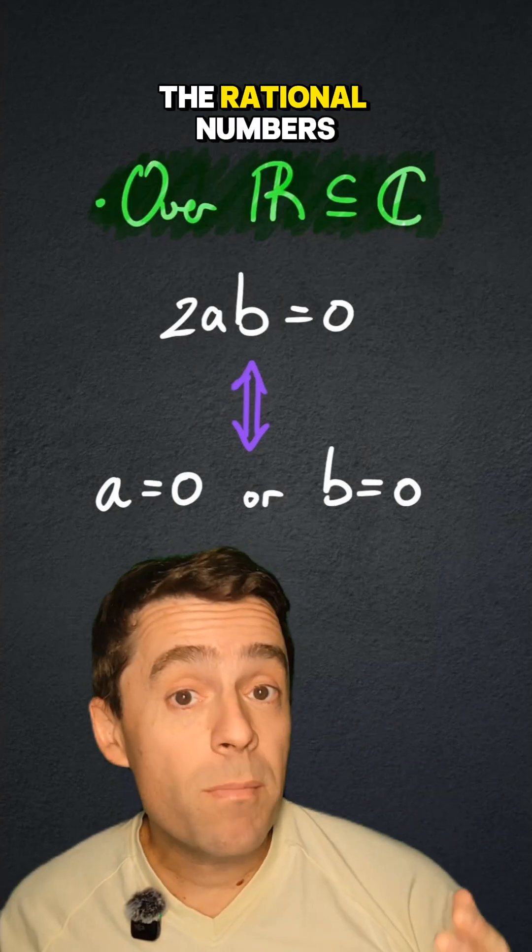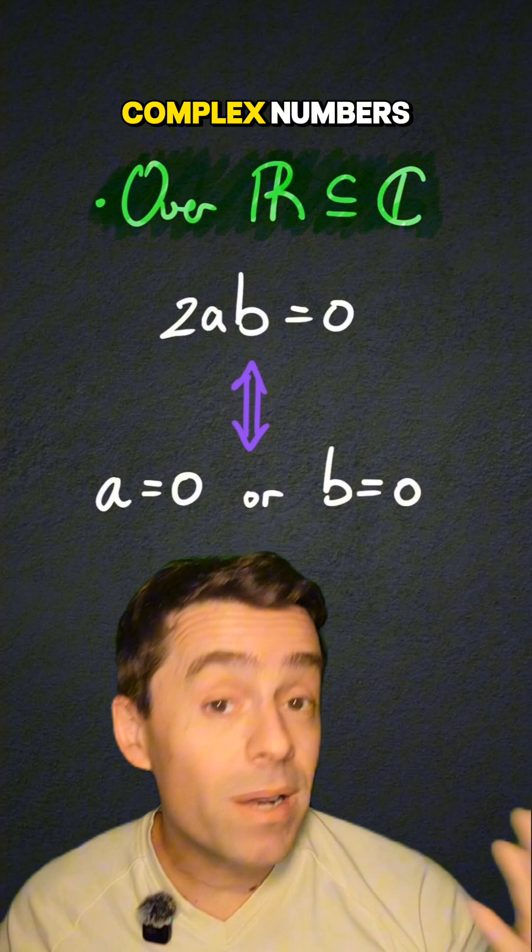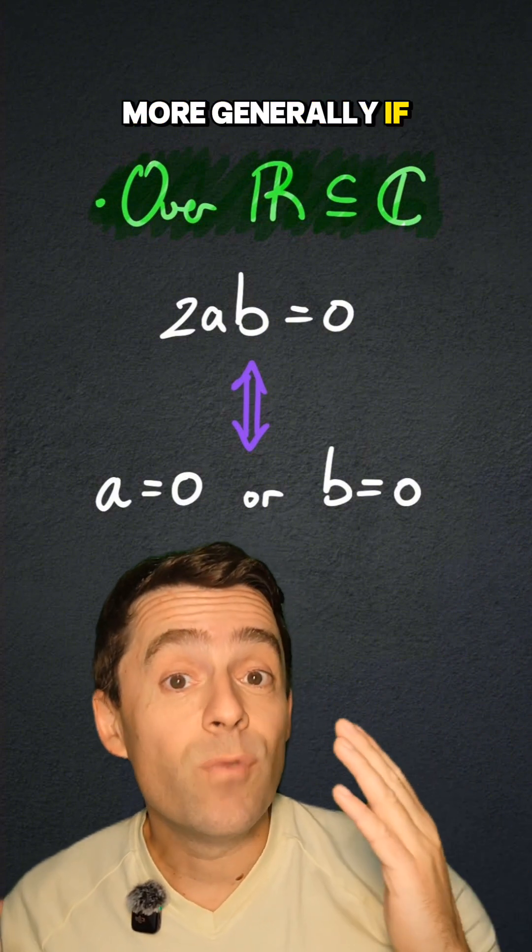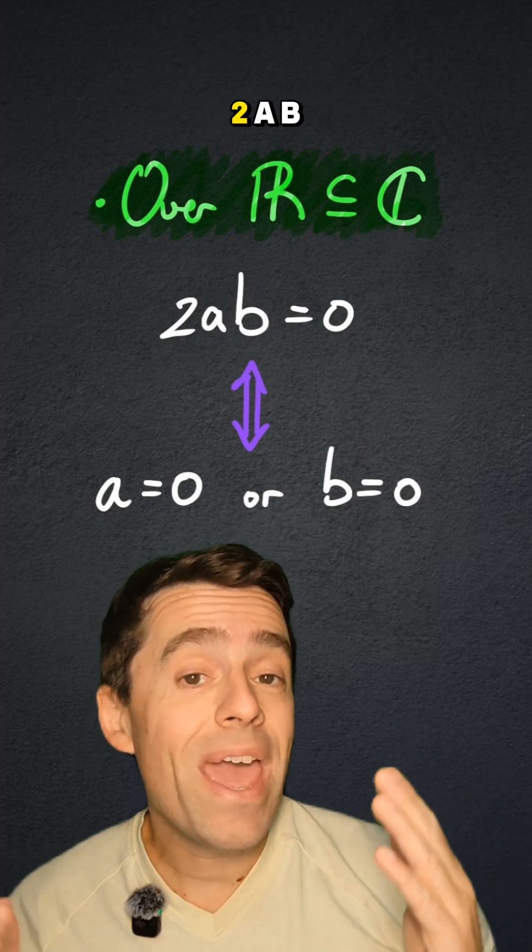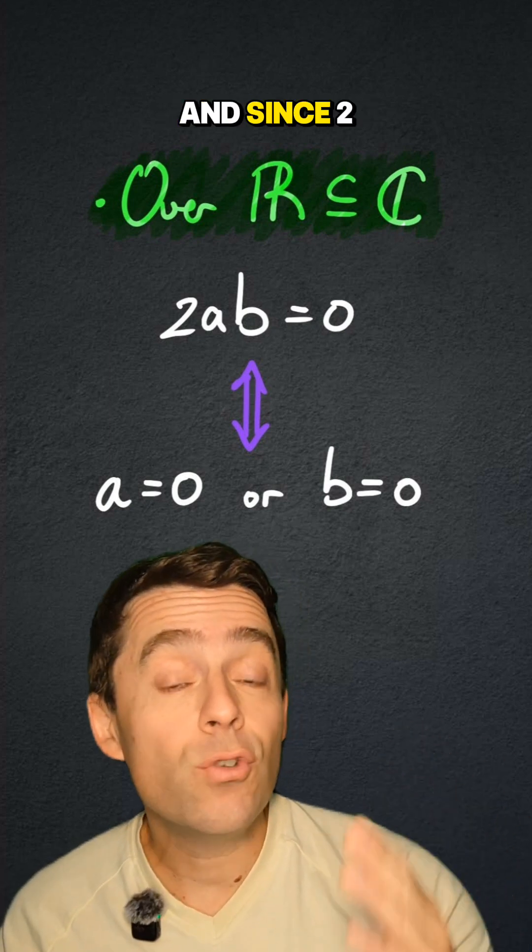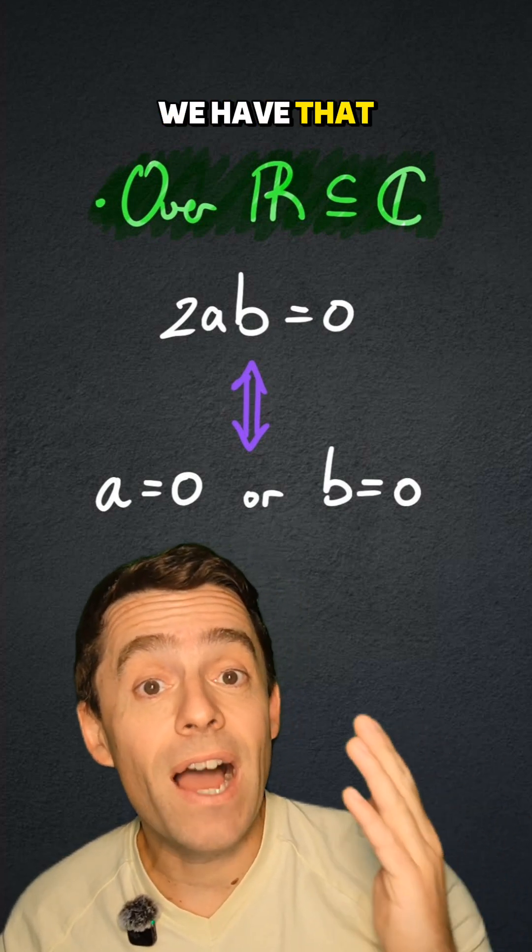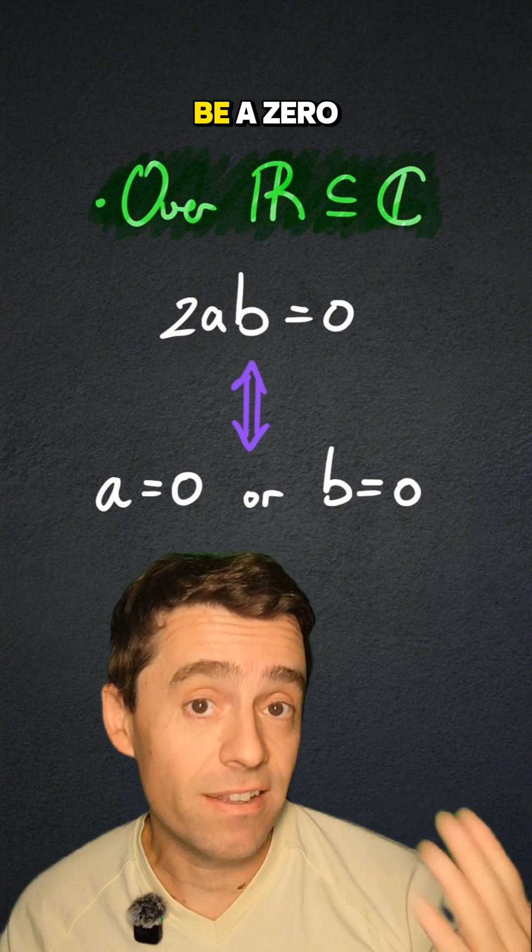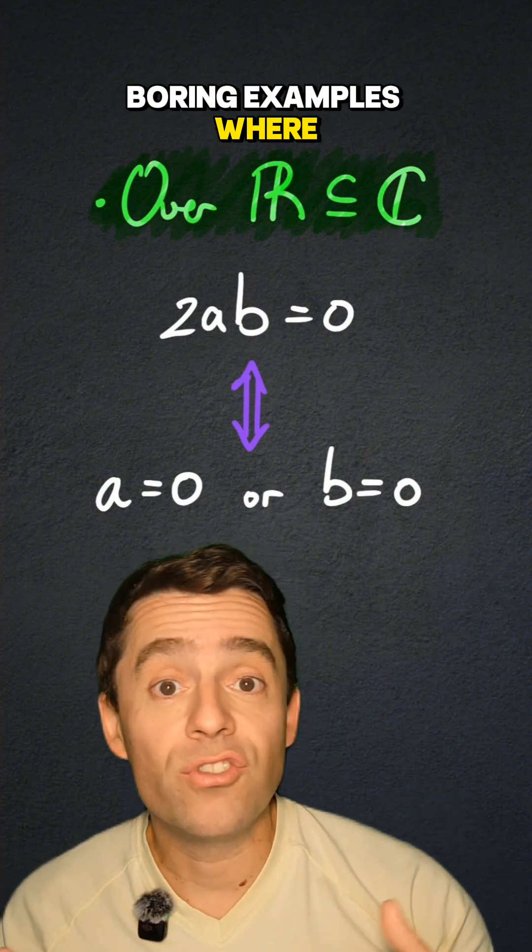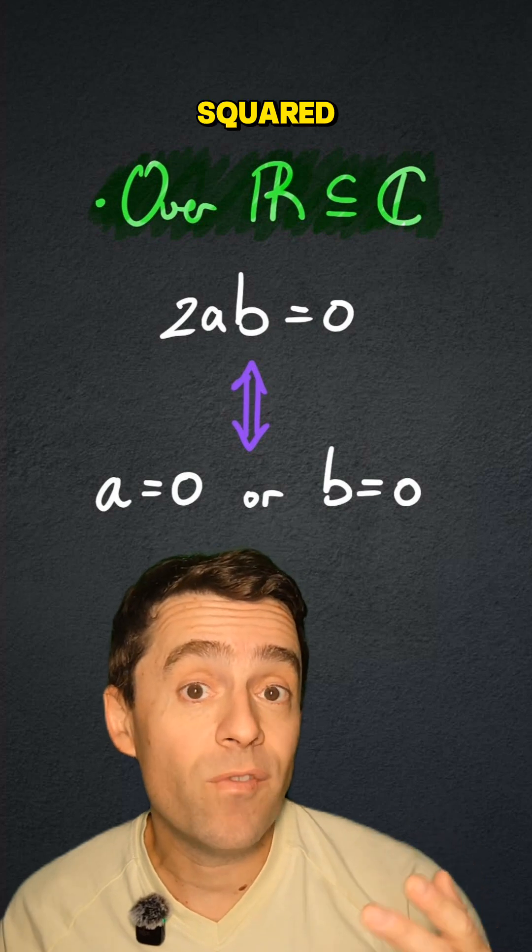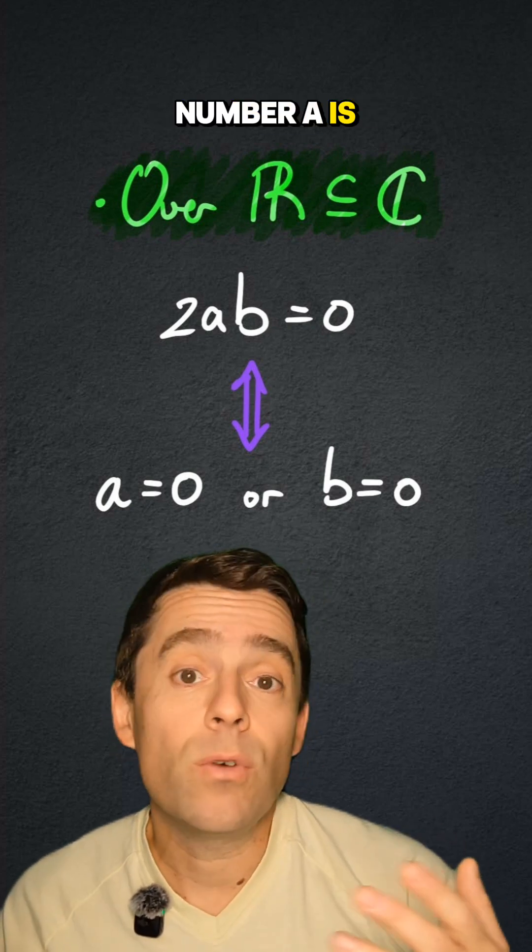Over the rational numbers, over the real numbers, over the complex numbers more generally, if we have that ab plus ba is equal to zero, then we have that 2ab is equal to zero. And since 2 is non-zero, we have that either a or b has to be zero, which leads to boring examples where the square root of a squared for a positive number a is equal to a.